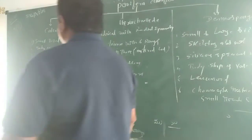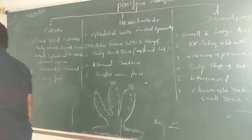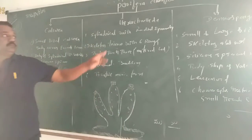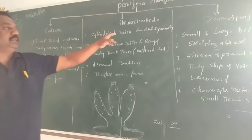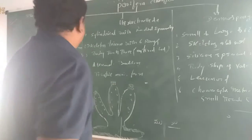The three main groups of Porifera are: number one, Calcarea; number two, Hexactinellida; and number three, Demospongiae.